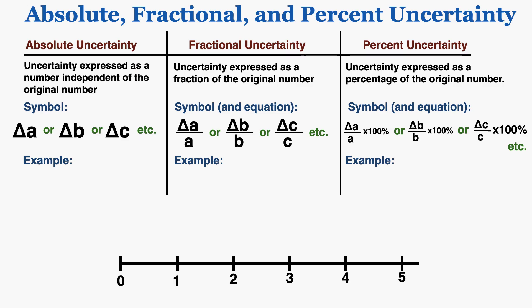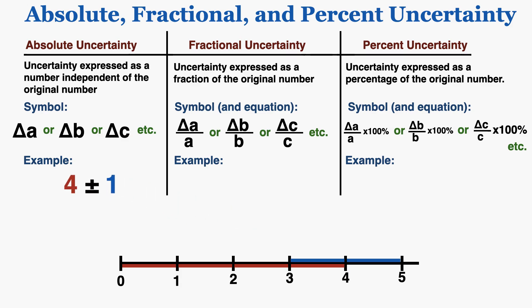I'll give you a visual to understand the difference between each of these. Let's say that we have 4 plus or minus 1. On the number line, the actual value could be as low as 3 or as high as 5. The red line indicates the value of the measurement and the blue line indicates the uncertainty. I can understand how big that uncertainty is without referring to the 4 — no matter how big the measurement is, the uncertainty itself is plus or minus 1. Because that number is independent of the measurement, the uncertainty is expressed as an absolute uncertainty.